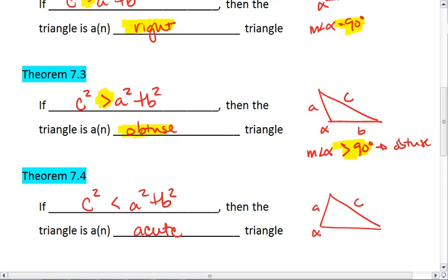Because this angle alpha is less than 90 degrees, so it's an acute angle giving us an acute triangle. So c squared being less than means acute because an acute angle is less than 90 degrees.